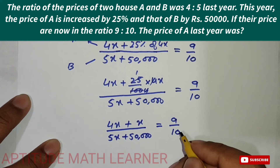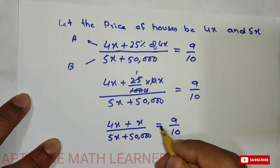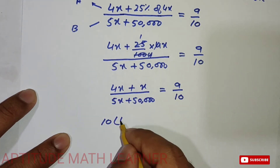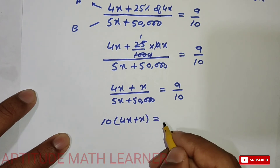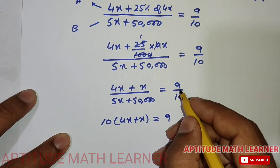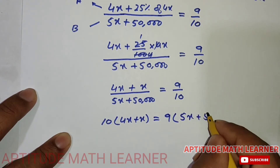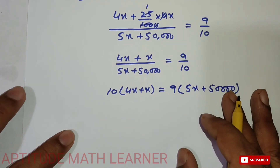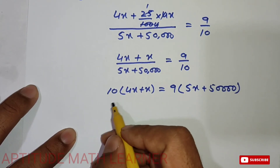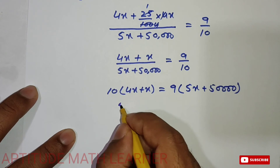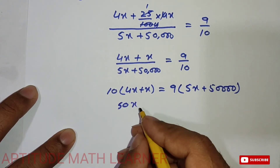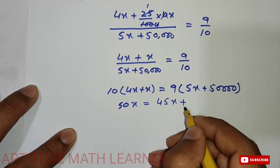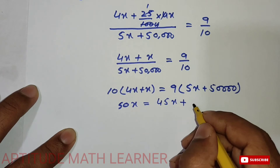Now we cross multiply to find the value of X. This gives 10 multiplied by (4X + X/5) = 9 multiplied by (5X + 50,000). Expanding the left side: 5X multiplied by 10 gives 50X. On the right side, 9 multiplied by 5X gives 45X, so we get 50X = 45X + 9 × 50,000.